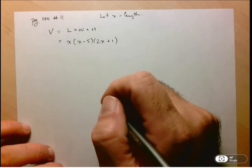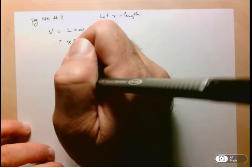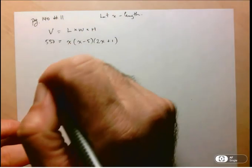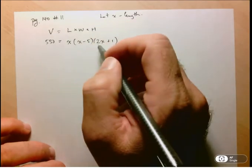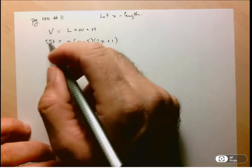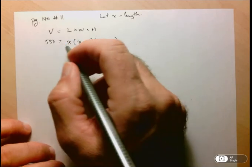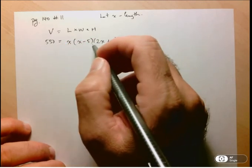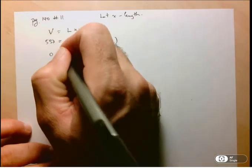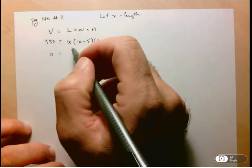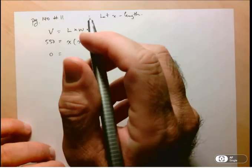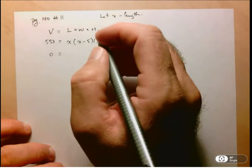And what we want to do is determine when the volume is equal to 550. Now here, while the right-hand side is factored out, we don't have zero on the other side of the equation, so this is of little use to us. So what we're going to have to do is bring that 550 to the other side of the equation, but unfortunately we're going to have to expand this out and then see if we can refactor afterwards.